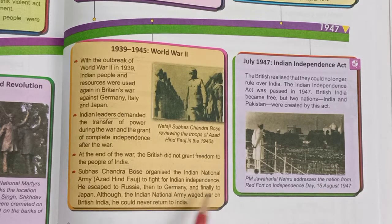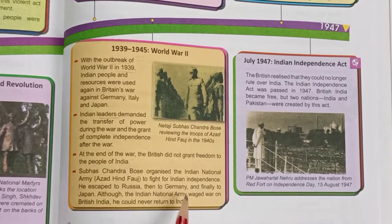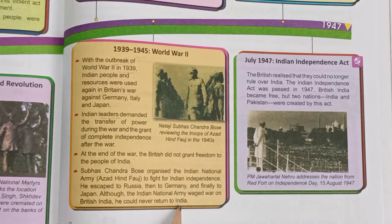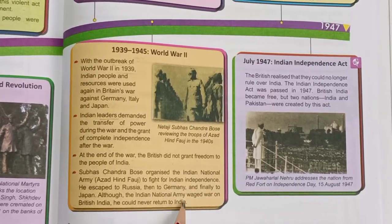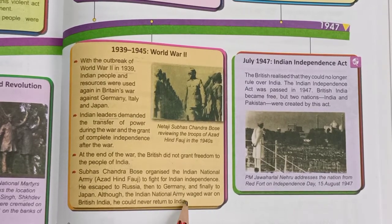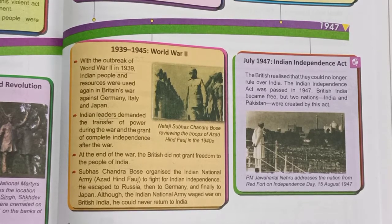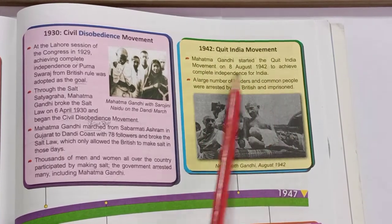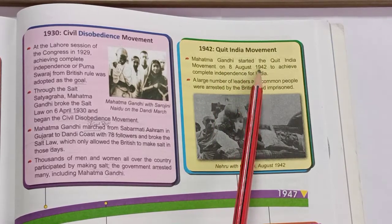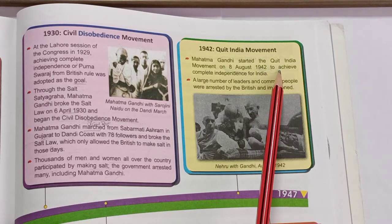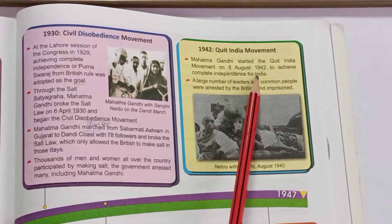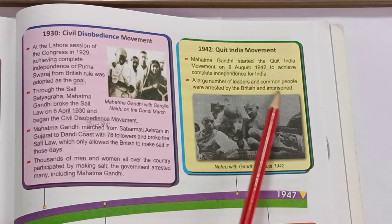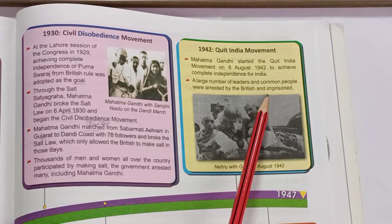Although the Indian National Army waged war on British India, Subhash Chandra Bose could never return to India. In 1942, Mahatma Gandhi started the Quit India Movement on 8th August 1942, to achieve complete independence for India. A large number of leaders and common people were arrested and imprisoned by the British.